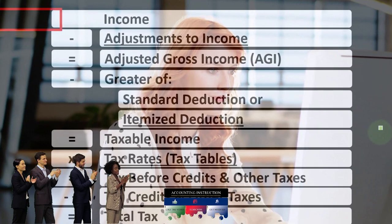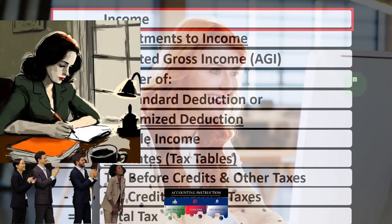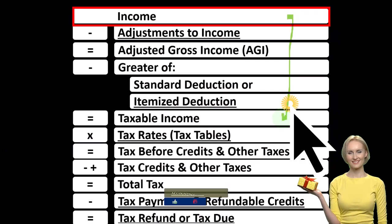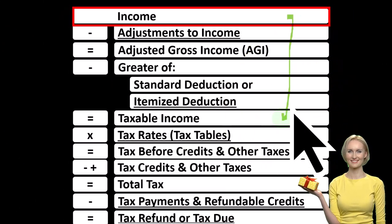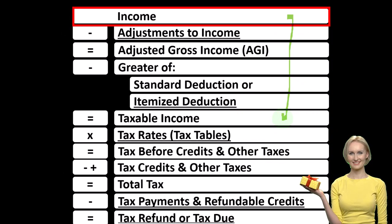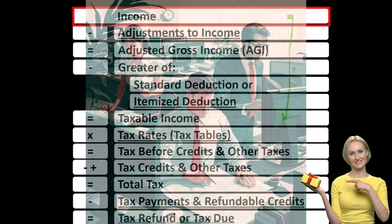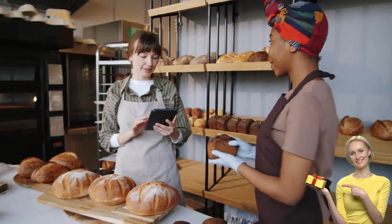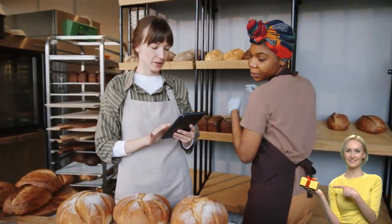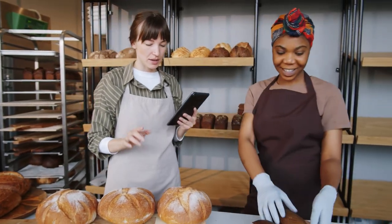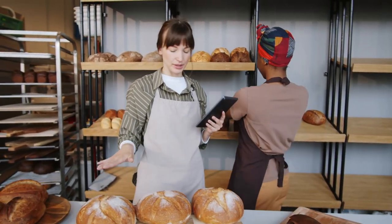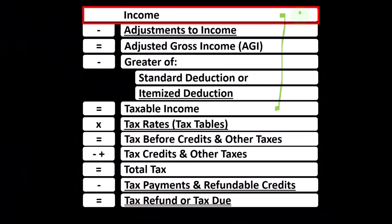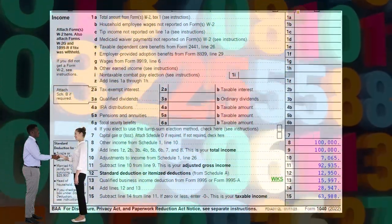Looking at the income tax formula, we're focused on line one income. The first half of the income tax formula is in essence an income statement — just an outline, a scaffolding — with other forms and schedules feeding into these line items, such as the Schedule C, which is the small business tax form. It's basically an income statement in and of itself, having income minus expenses or business deductions, with net income flowing into line one of the income tax formula. Here's the first page of a Form 1040.